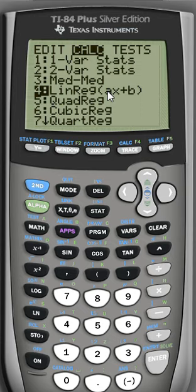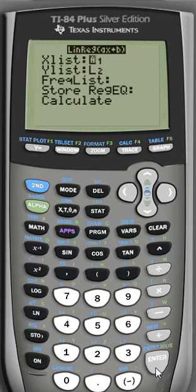Notice that the calculator will tell us the form. It's going to be of the form AX plus B. We go ahead and hit enter. X list is L1, y list is L2, everything looks good. We can go down and calculate.